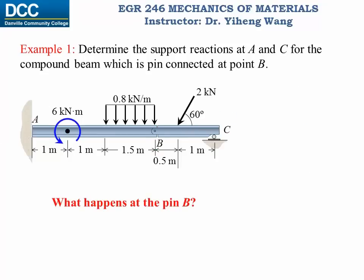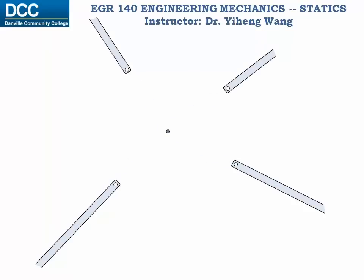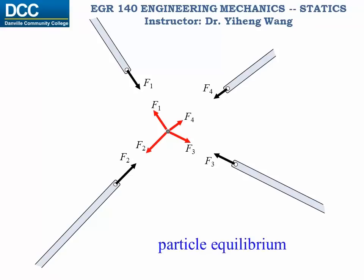What happens at point B? Let's analyze the pin that connects these two members. Recalling the method of joints — for members connected through a pin, if we separate them, these are the forces exerted by the pin to each member. Because of Newton's third law of action and reaction, these are the forces exerted by the members to the pin, forming four pairs of forces with the same magnitude and opposite directions. The pin is in particle equilibrium.